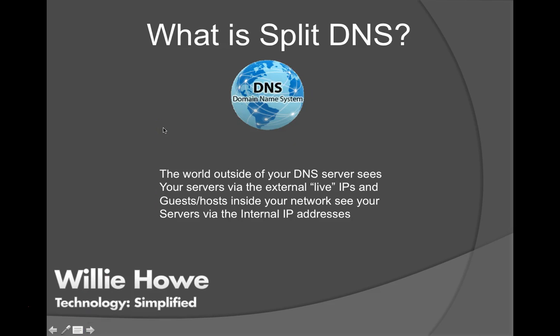So what is split DNS? When you have split DNS, the world outside of your network sees your servers via the live external IP address that's on your firewall — the one you forwarded ports through. Hosts inside your network see your servers via internal IP addresses. I'll explain that further on the next slide.